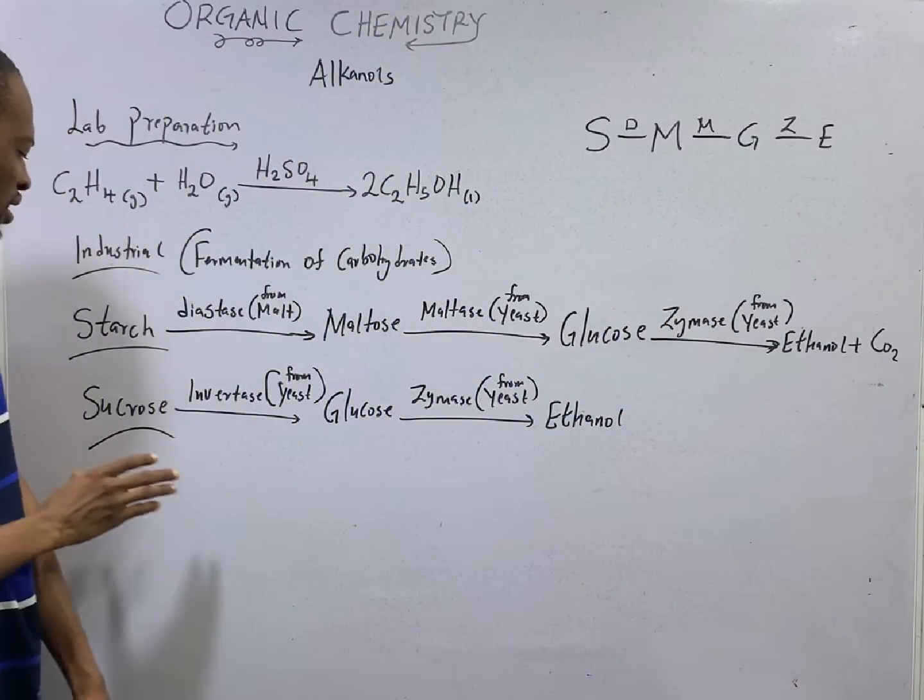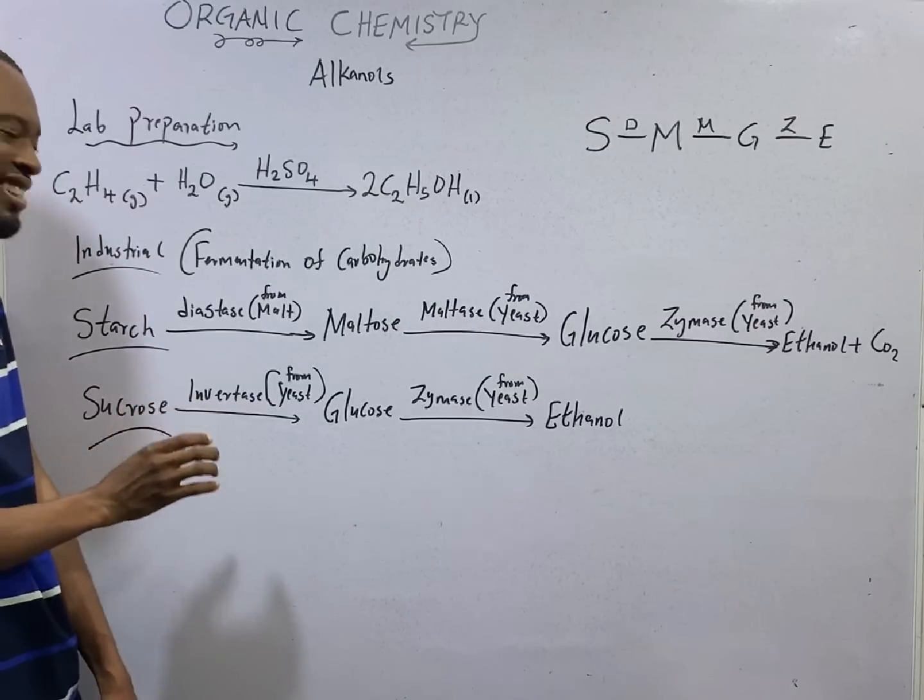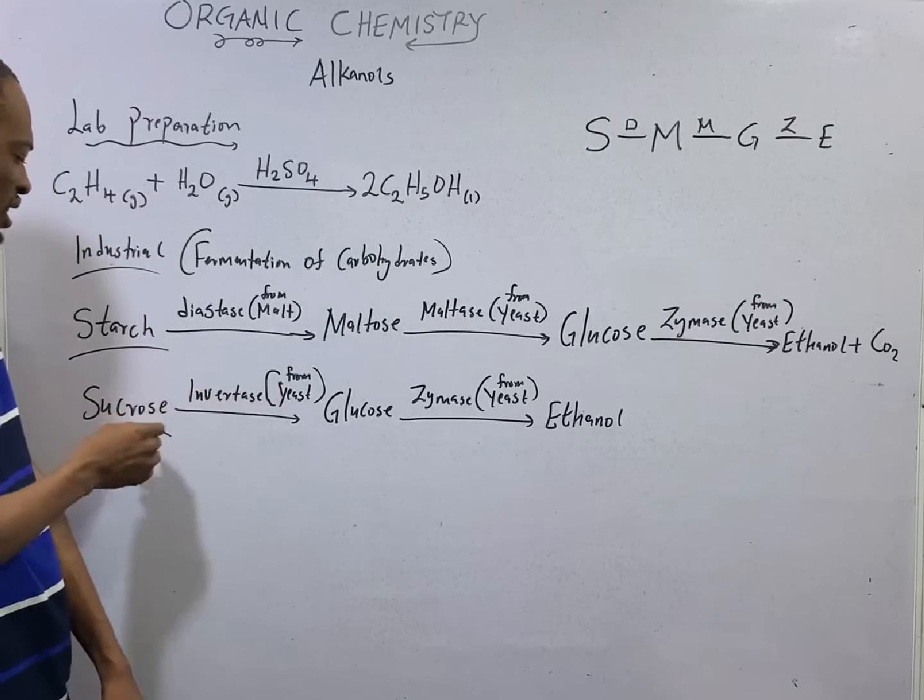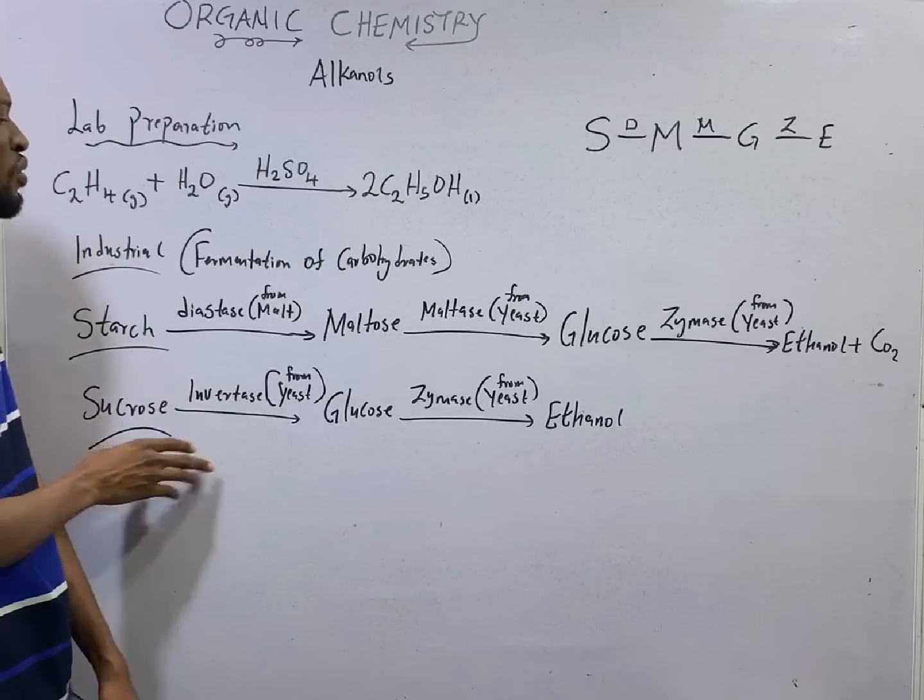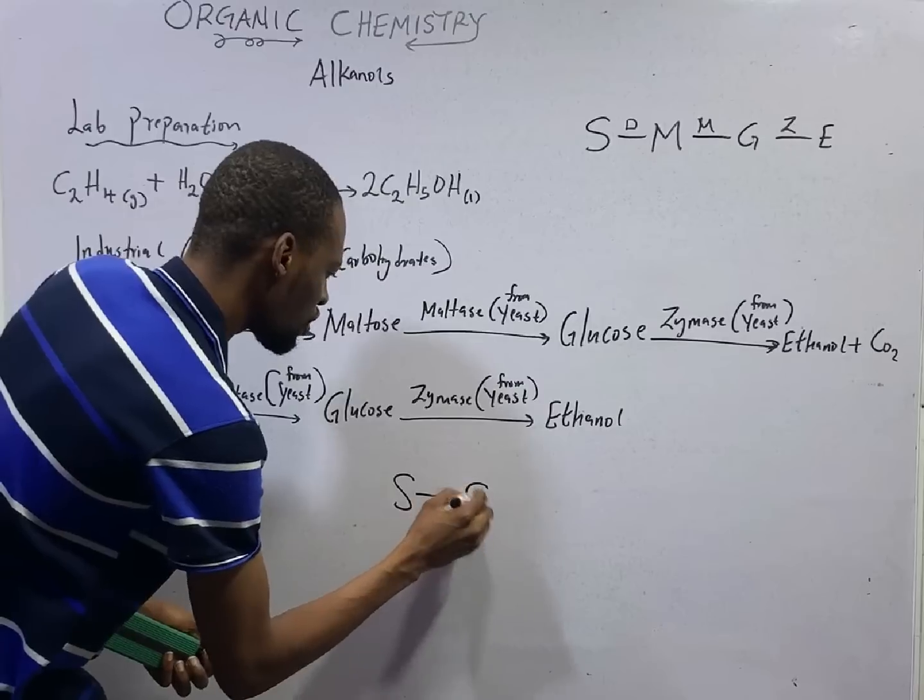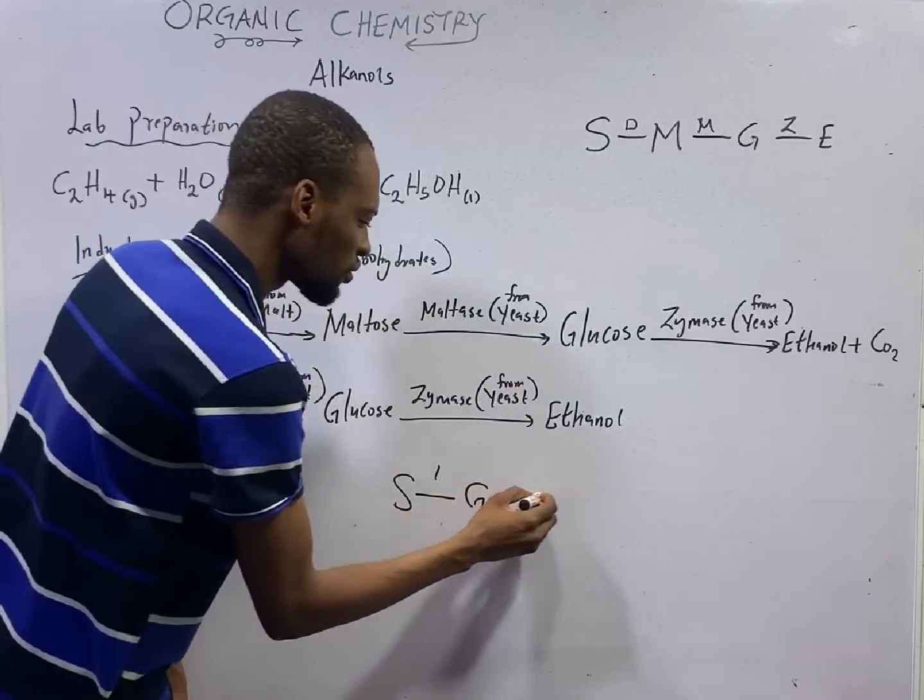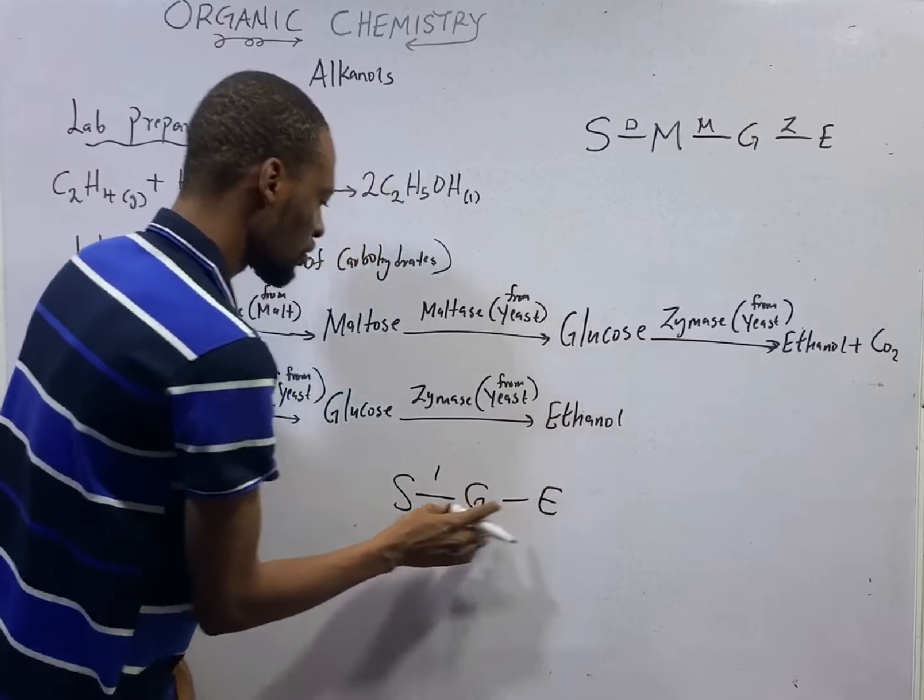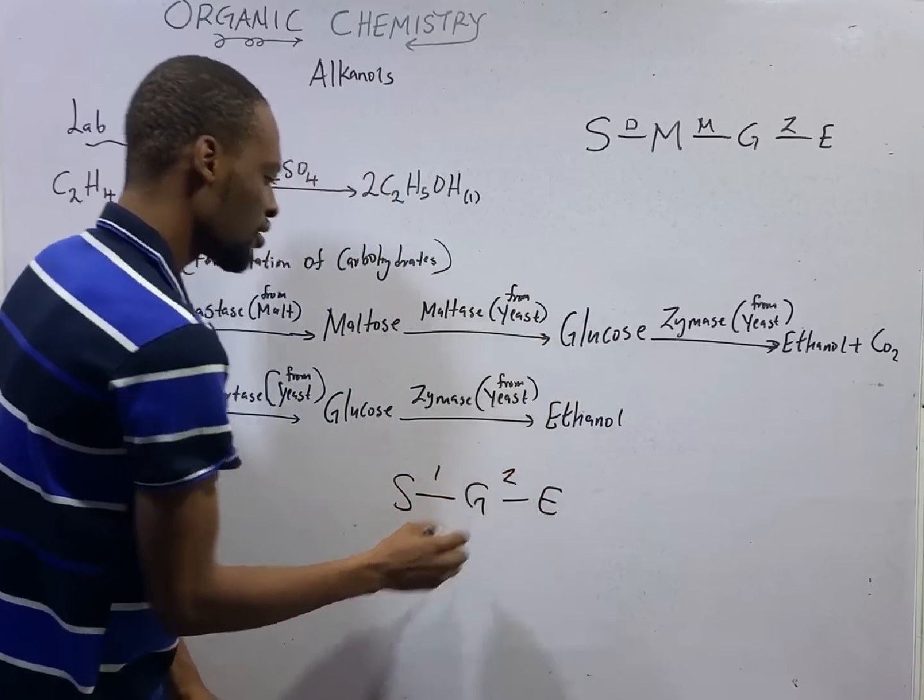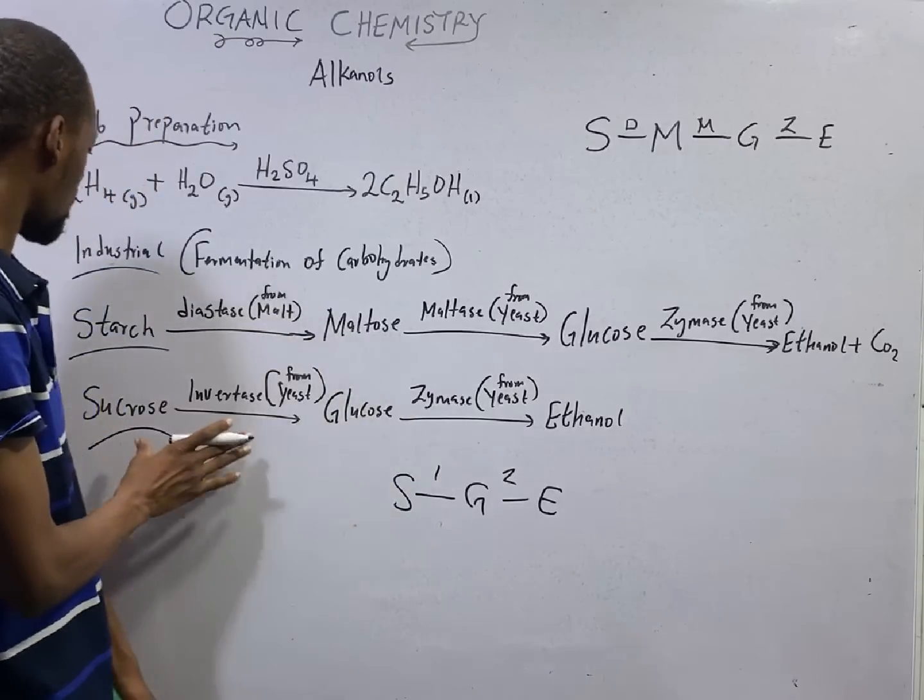You can as well prepare ethanol directly from sucrose. When an enzyme referred to as invertase acts on sucrose, it will change it to glucose. So, sucrose to glucose, invertase. From glucose to ethanol, then zymase. So, S-G-E-I-Z.